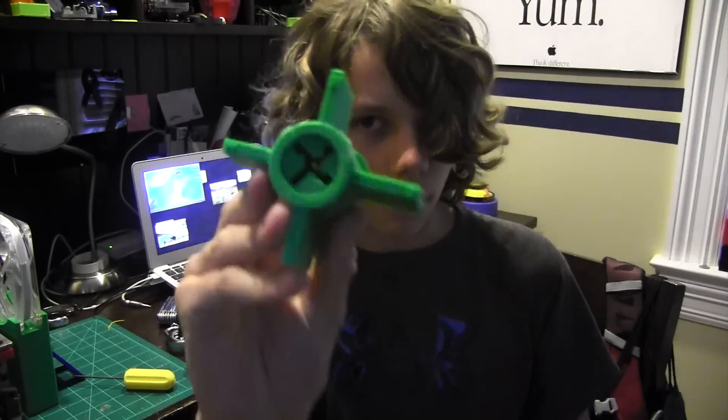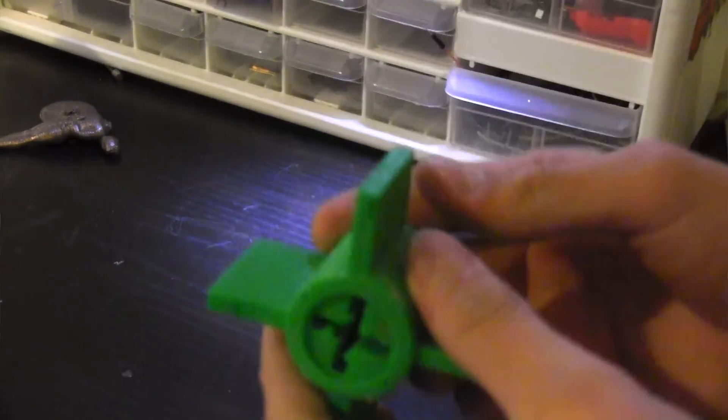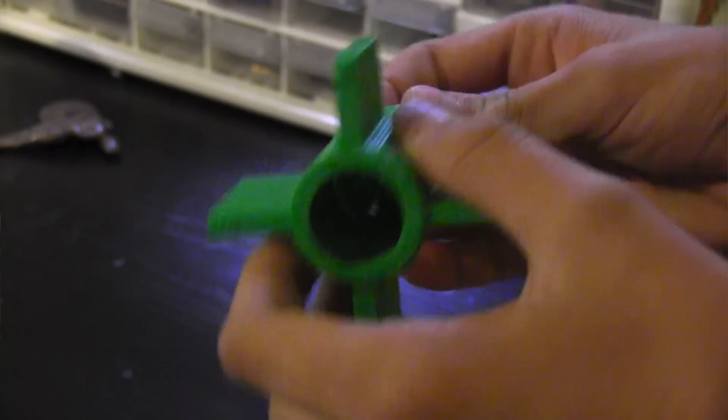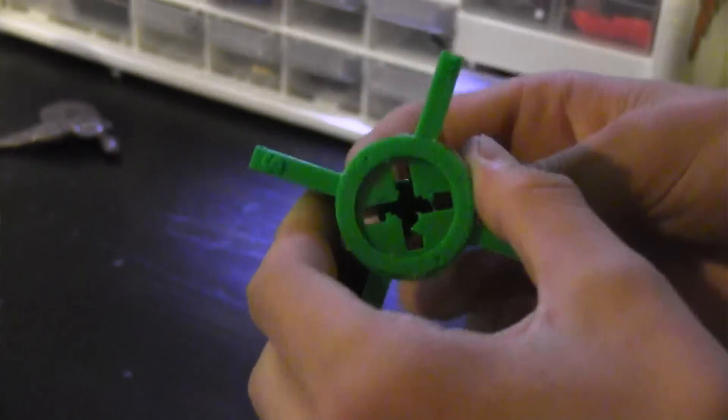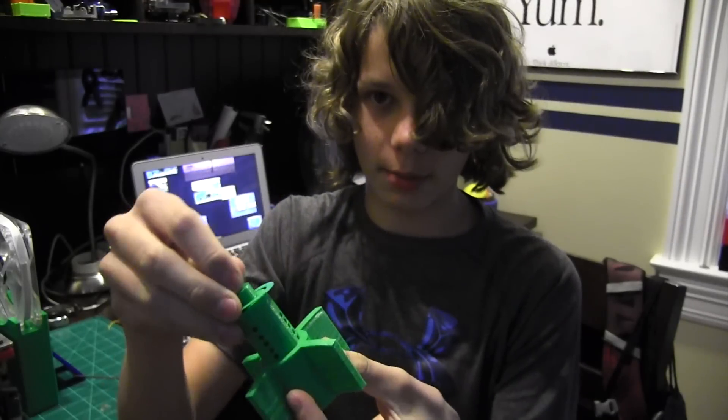This was the second prototype of the lock. In this one, the barrel actually fit inside, and it could spin freely. I just had to adjust the tolerances, and I also printed these little caps to keep the barrel from going through. This one I didn't glue on though, because I wanted to be able to take the barrel out.